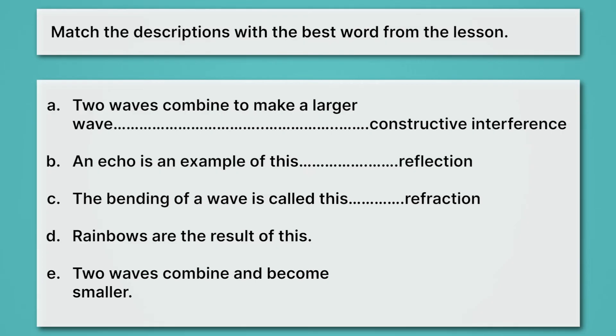D, rainbows are the result of this. Refraction. The bending of light. Specifically, the fact that different colors of light bend different amounts. Okay, E, two waves combine and become smaller. That's destructive interference. Two waves are overlapping, and the fact that they become smaller means it's destructive.